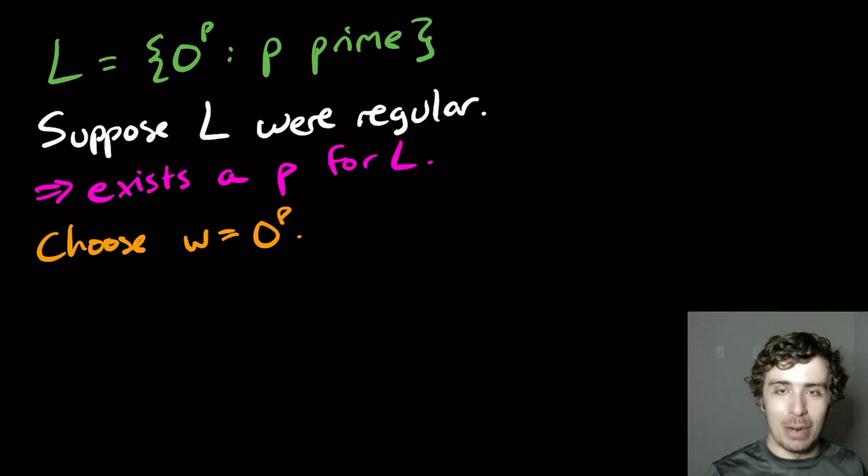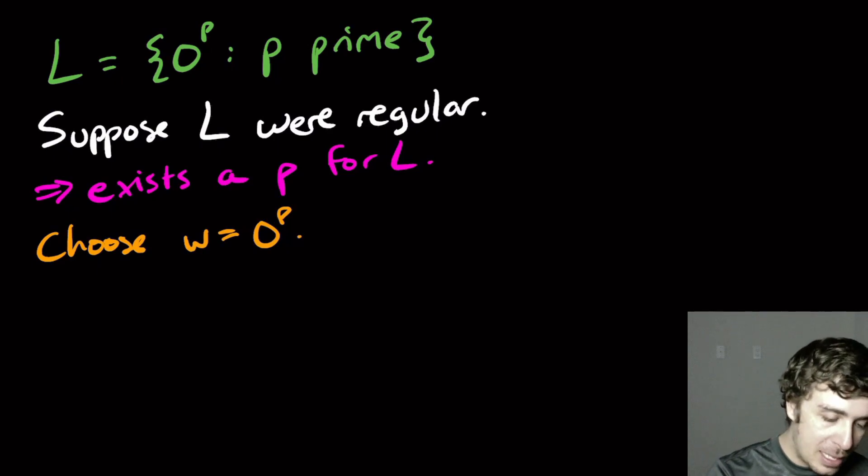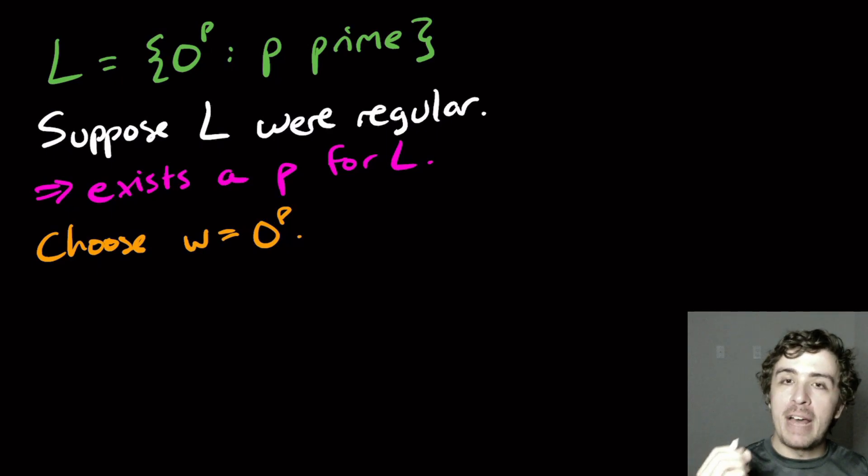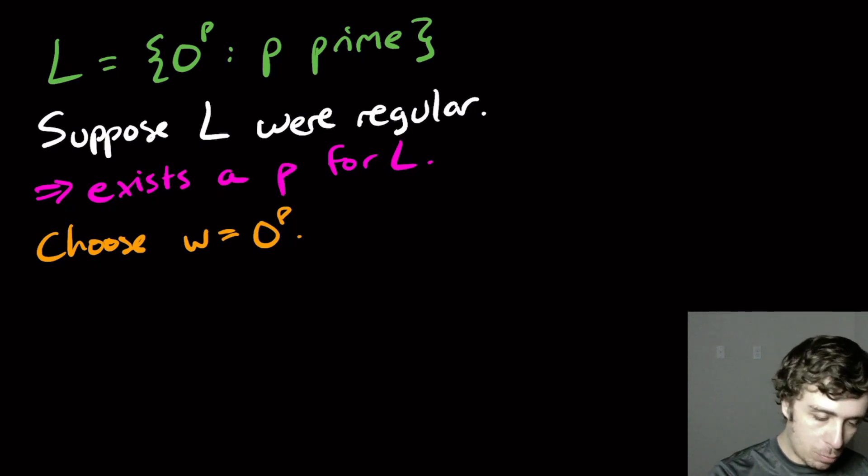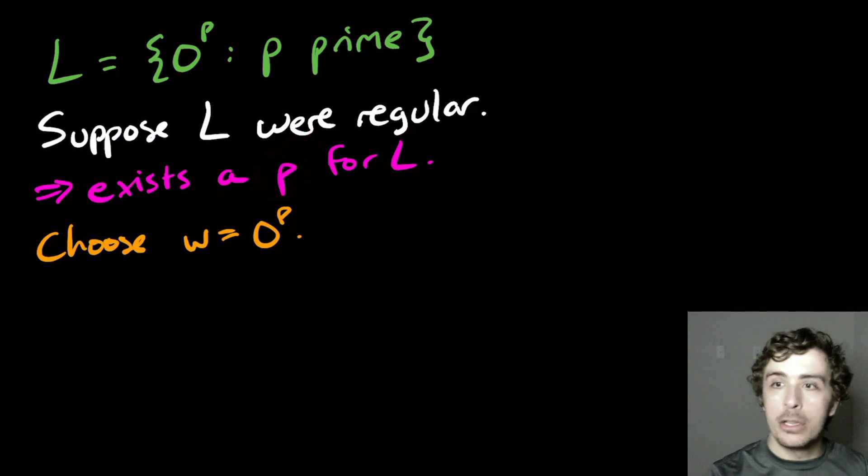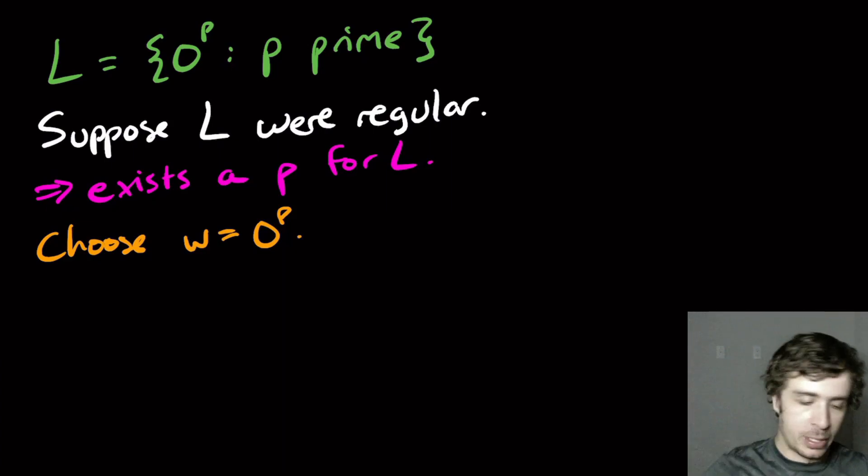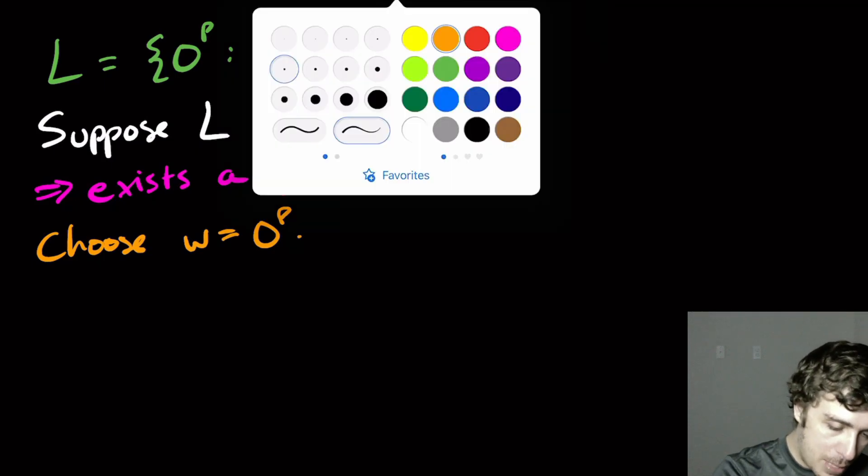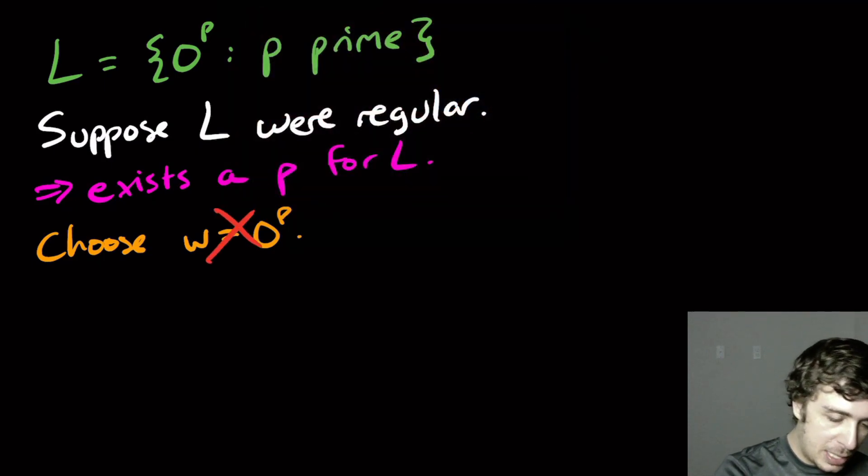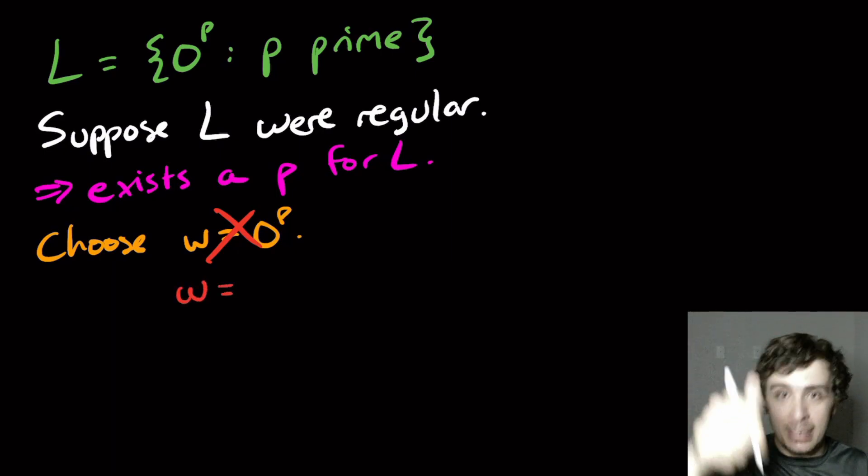So the way to get around this is use the fact that there are infinitely many primes. So whatever this number is, there's always a prime larger than it. So I'm going to pick the next prime above P.